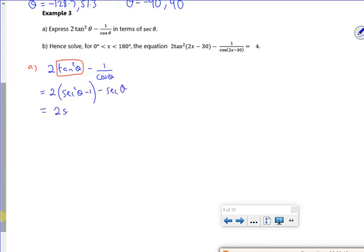And then I've got a secant there. So I've got 2 secant²θ minus 2 minus secant θ. So I've got a quadratic, in the right order, there. So that's part a.